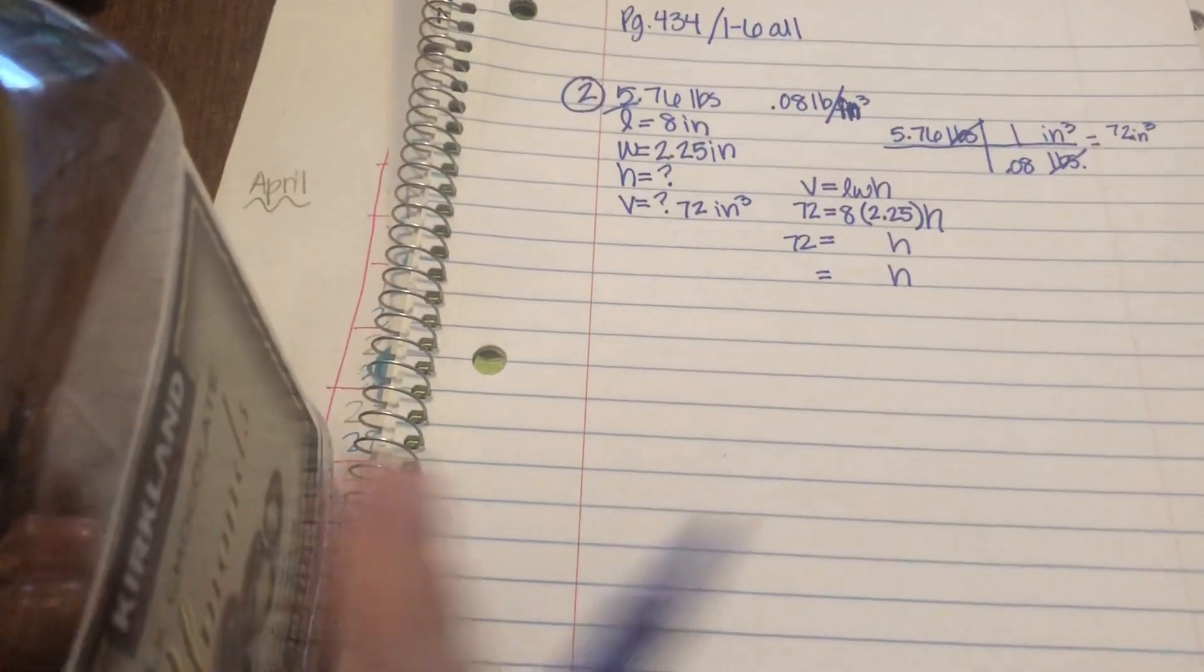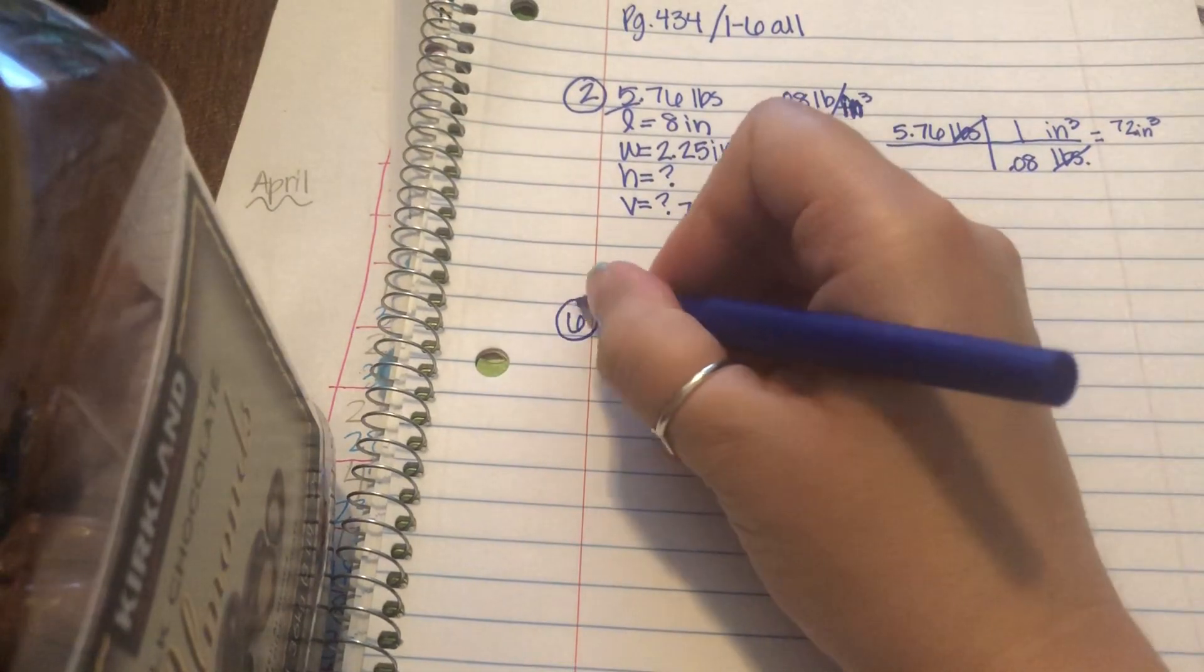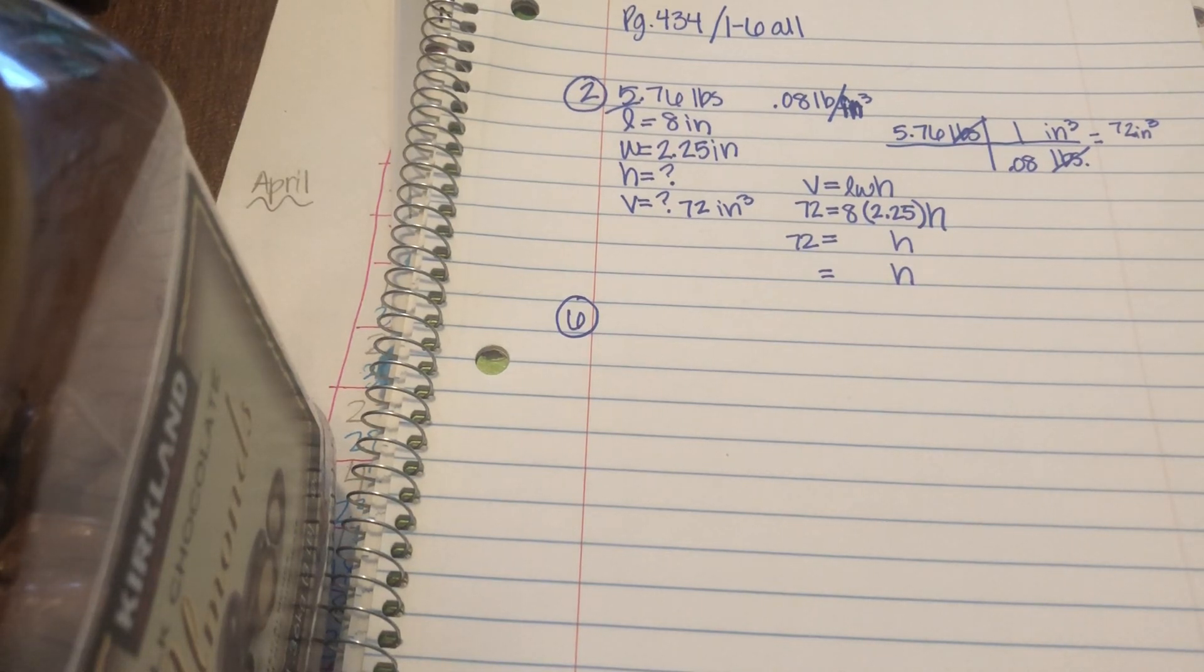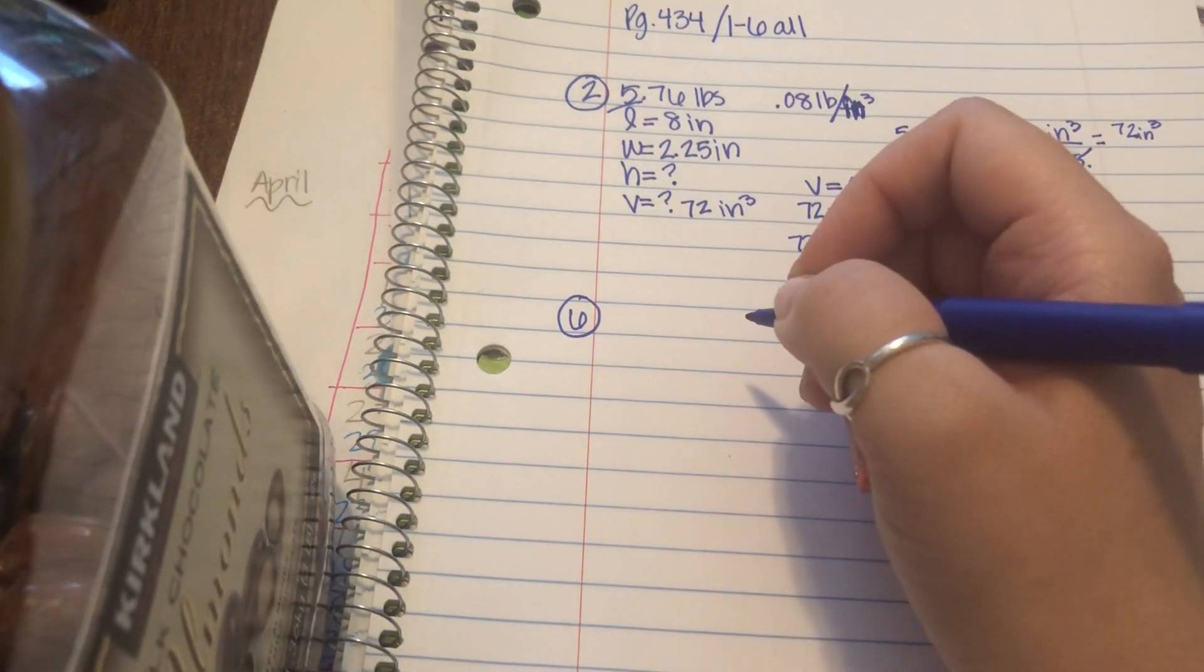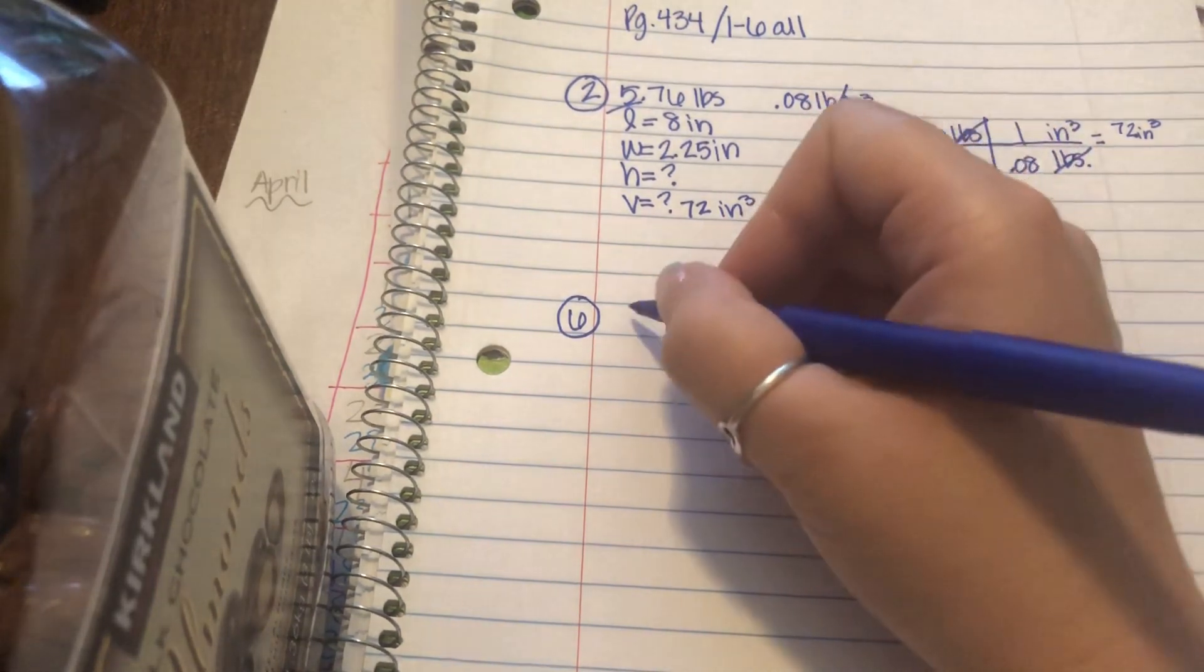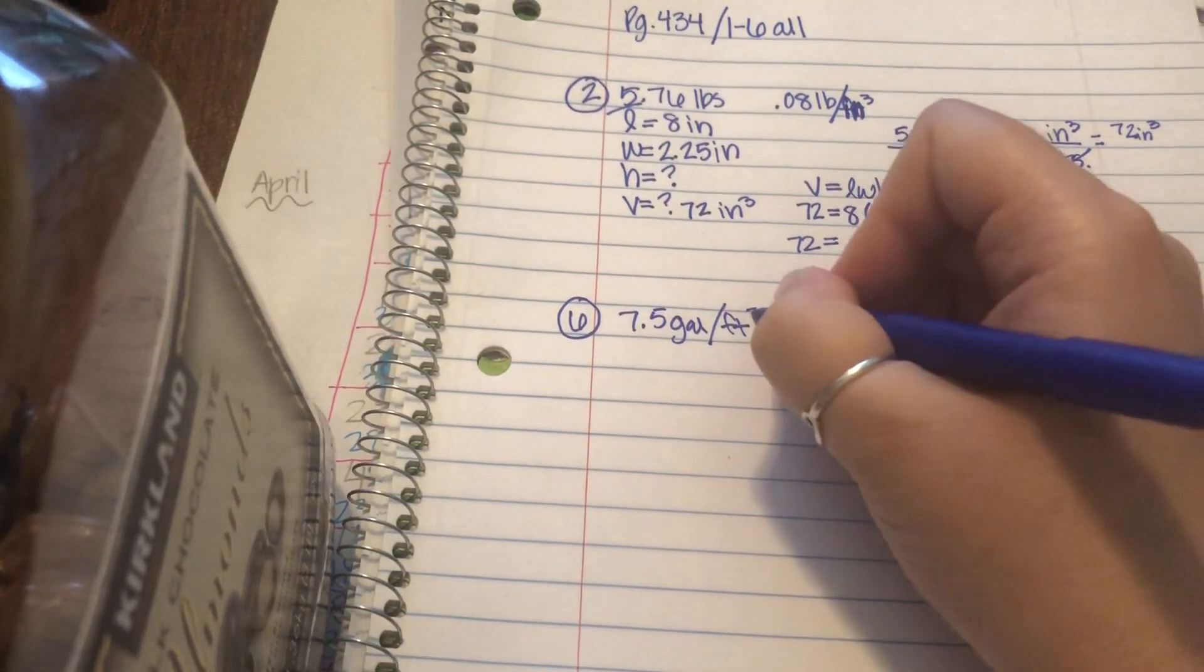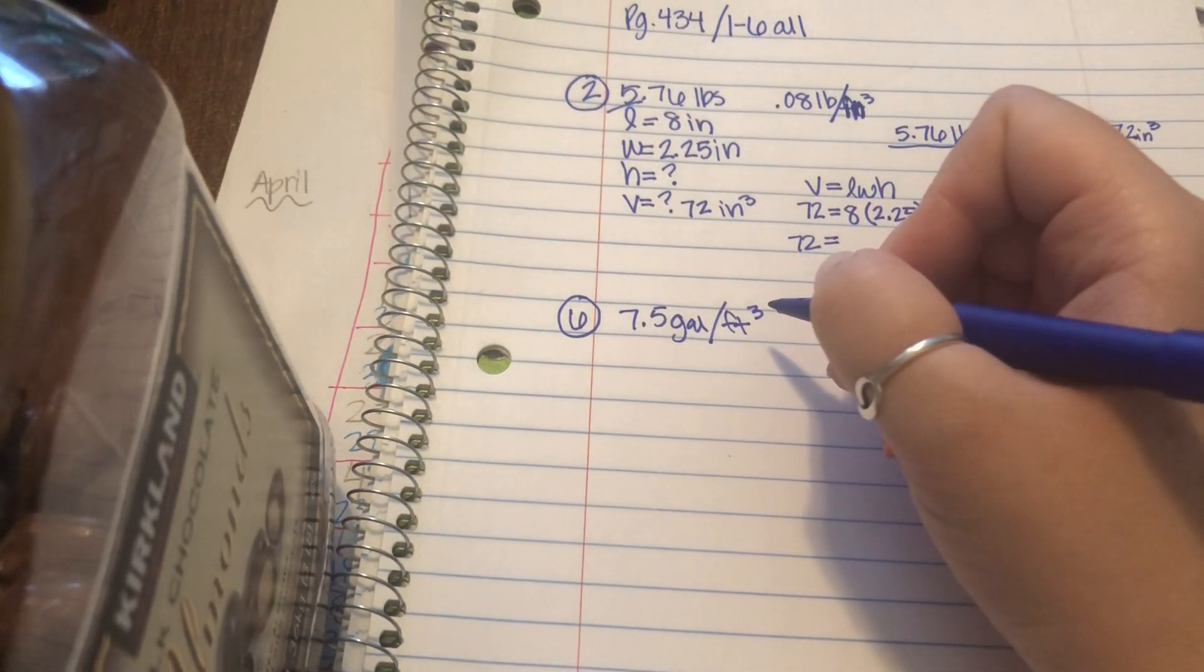So let's take a look at problem six. And again, as you read it, I strongly suggest that you write down the information as you read it. It says about 7.5 gallons of water fill up one cubic foot of space. So 7.5 gallons per cubic foot. How many gallons of water will fill a goldfish pool shaped like the prism shown? So how many gallons of water?